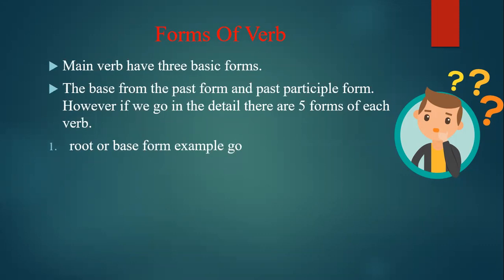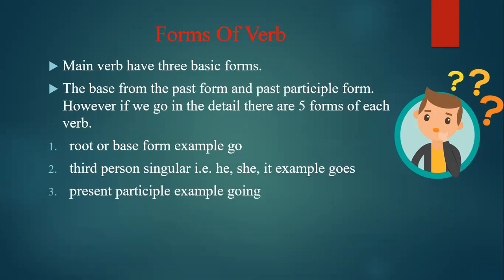Root or base form, for example 'go'. Third person singular, that is he, she, it - example 'goes'. Where there is a third person singular, we add s or es in the root form. Present participle form, for example 'going'. Here you add ing in the root form.